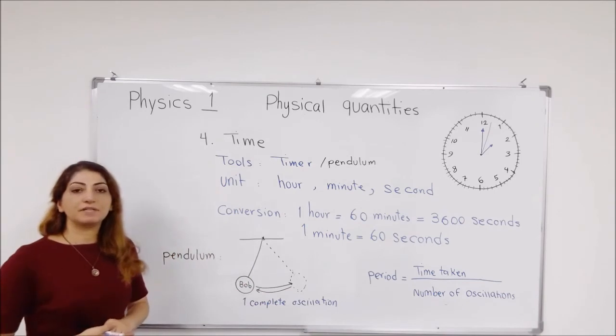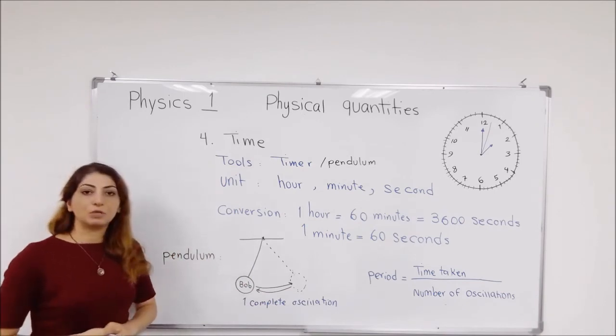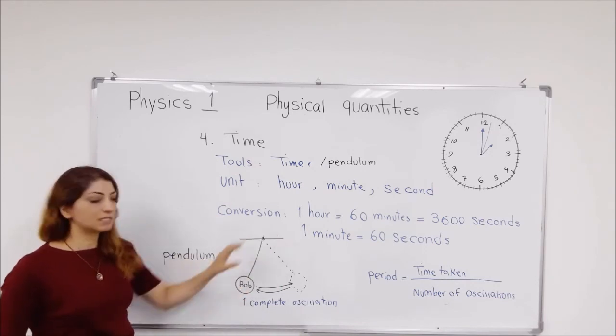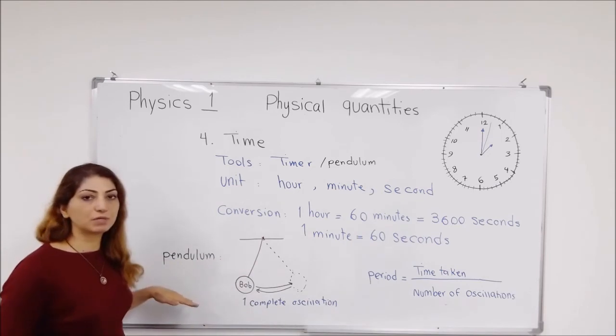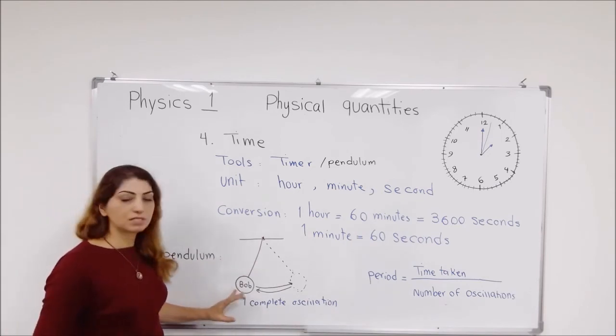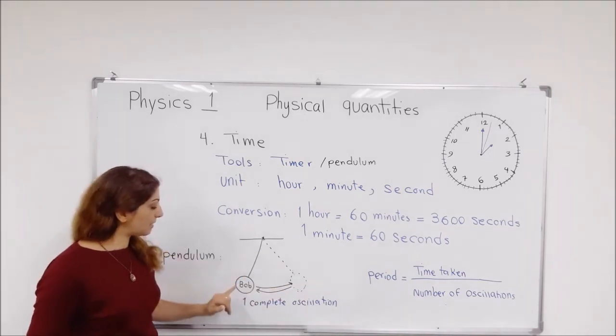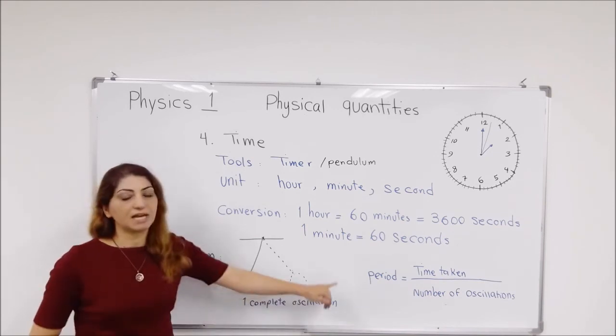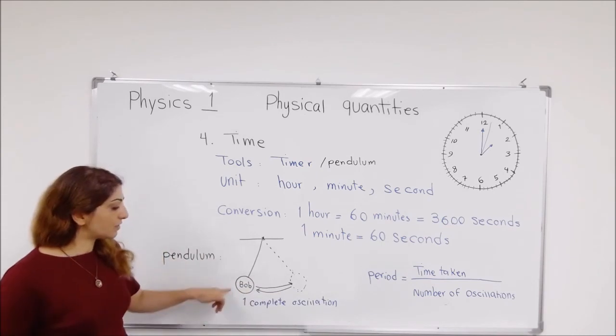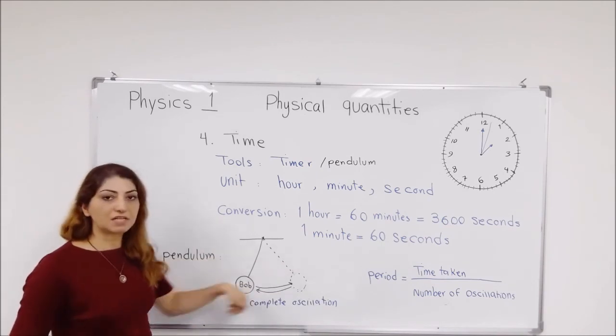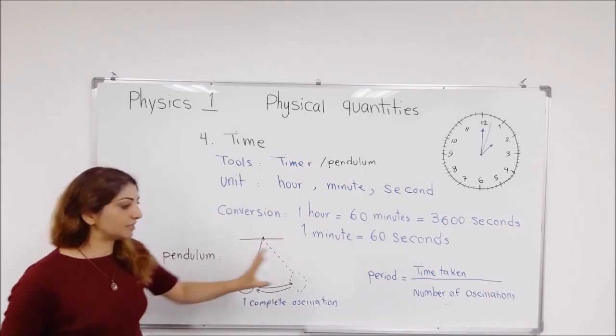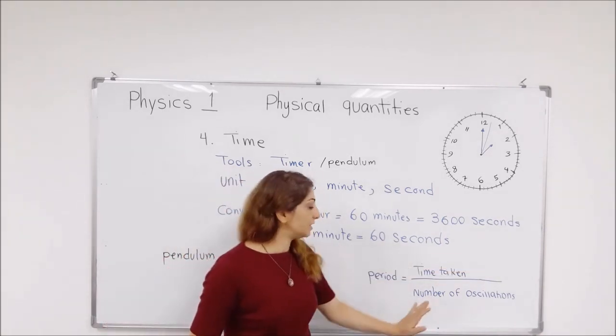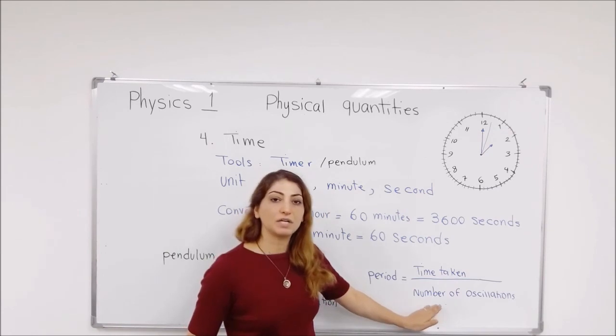And the next part, we have to talk about pendulum, which is a ball which is attached to a fixed point and it moves forward and backward. If it gets tossed from the original place, it goes forward and comes back to its original place again. This becomes one complete oscillation. So if you count the number of oscillations and the time taken for them, you can calculate the period. The period means the time taken over the number of oscillations done in that time.